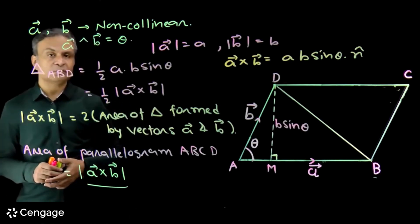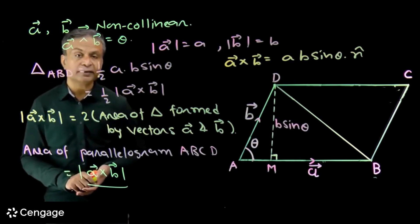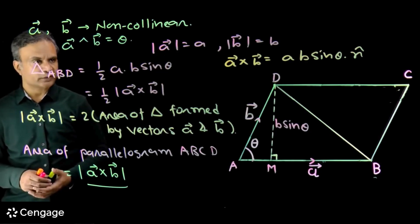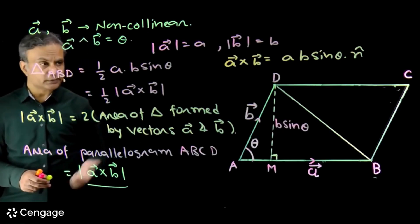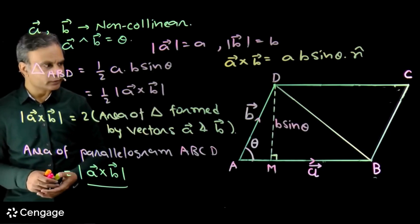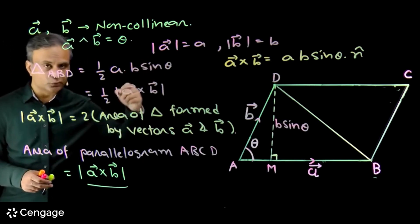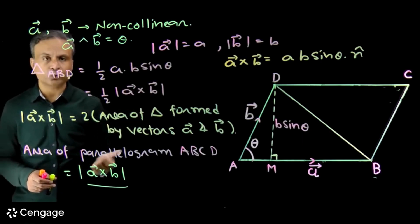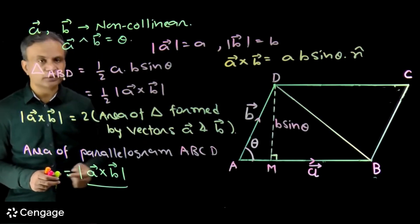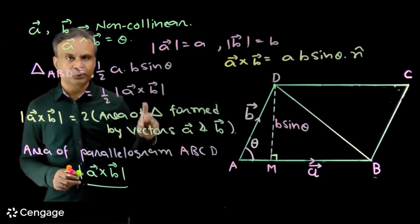If angle theta is 0, then vectors A and B will be collinear — we won't have any two-dimensional figure, so the area will be 0. When we put theta equal to 0, we get value 0 because sine 0 is 0. If angle theta is 90 degrees, we will have a rectangle and a right angle triangle. Triangle ABD will be a right angle triangle, and area of the right angle triangle is half base times height. When theta equals 90 degrees, area equals one-half times A times B, which verifies that area of a right angle triangle is half times base times height. And area of rectangle ABCD will be A times B, which confirms that area of a rectangle is base times height.